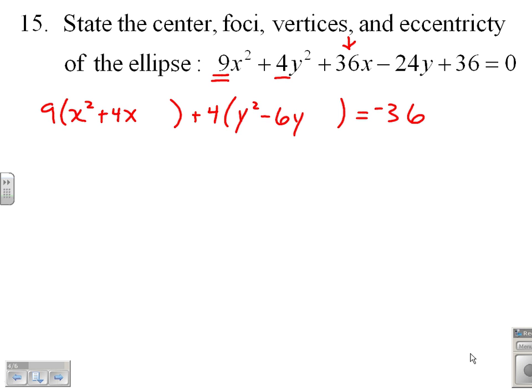So at this point, I need to ask, what do I need to do to complete the square? Well, I take half of 4, which is 2, and square it, 2 squared is 4, and put in a plus 4.